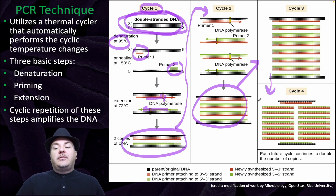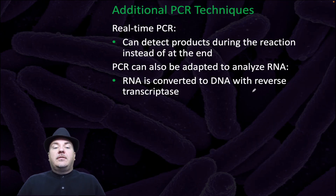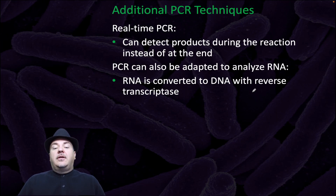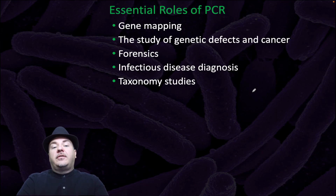Additional PCR techniques involve real-time PCR, which can detect products during the reaction instead of at the end. PCR can also be adapted to analyze RNA — RNA is first converted to DNA with reverse transcriptase. PCR is essential for things such as gene mapping, the study of genetic defects in cancer, forensics, infectious disease diagnosis, and taxonomic studies.